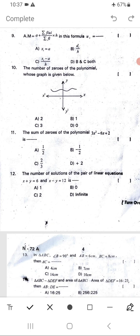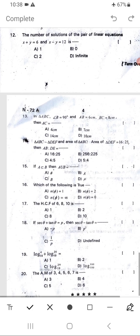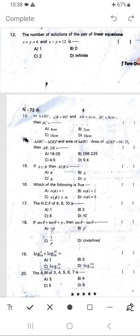Thirteenth: In triangle ABC, angle B = 90°, AB = 6 cm, BC = 8 cm, then AC is what? Fourteenth: Triangle ABC is similar to triangle ADF, and area ABC/area ADF = 16/25, then AB/DE is what?